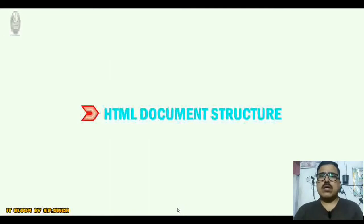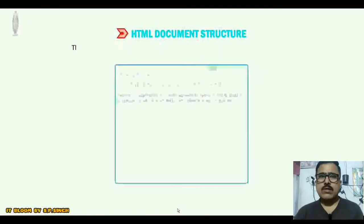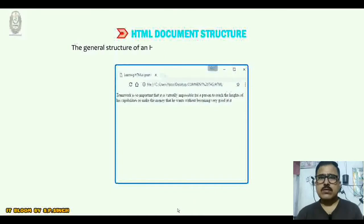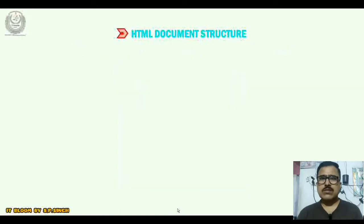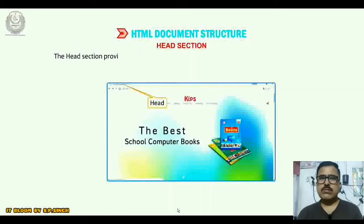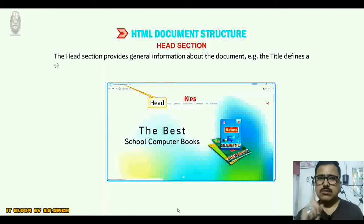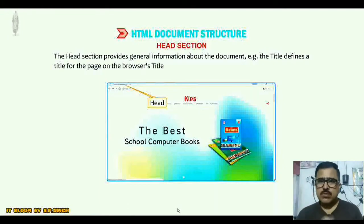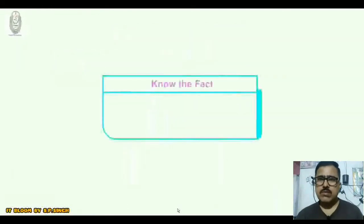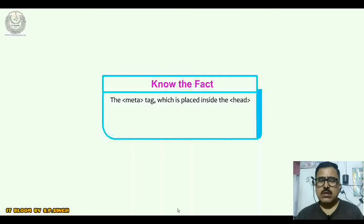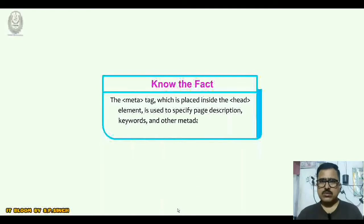Now I am going to discuss HTML document structure. The general structure of an HTML document has two sections: head and body. The head section provides general information about the document — for example, the title defines the title of the page on the browser's title bar. The meta tag, placed inside the head element, is used to specify page description, keywords, and other metadata information about the HTML document.